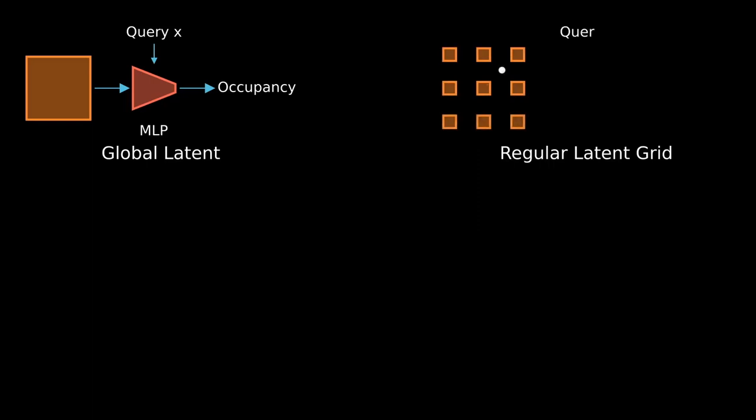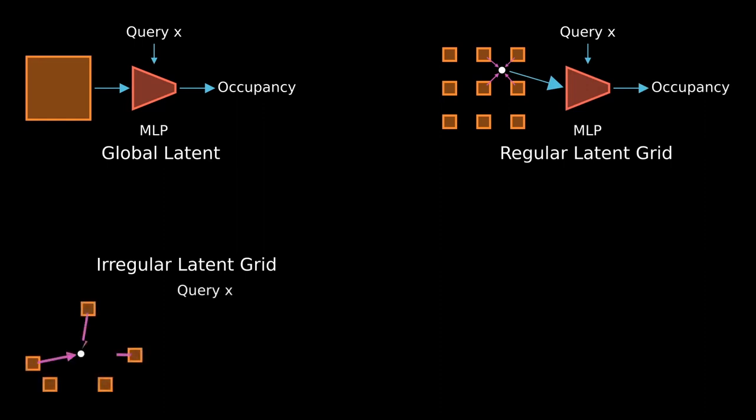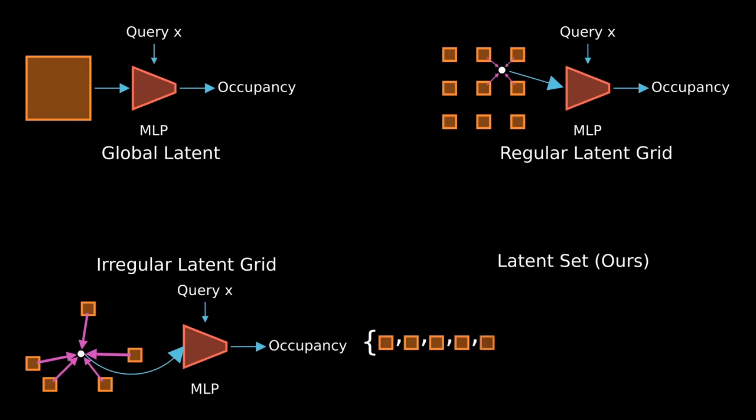How we represent 3D shapes is a key design choice for neural fields. The simplest method is using a global latent to describe a shape. This kind of method often leads to a low-quality shape reconstruction. Popular current methods define latents on a regular grid. However, the method does not scale well to larger grid sizes. Recently, irregular latent grid-based methods can achieve very high reconstruction accuracy. Our shape representation is a set of latent vectors. All spatial information is encoded by a neural network and not explicitly designed by a human. This yields significant improvements in reconstruction performance and representation size.